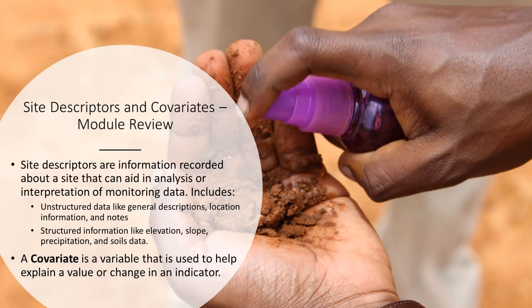So in review, site descriptors are information that we record about a sampling location that can aid in analysis or interpretation of monitoring data. These can include unstructured data like general site descriptions, location information, and other notes that you record. They can also include structured data that you collect at a site that are not directly indicators themselves, like elevation, slope, precipitation, and soils. Finally, a covariate is a variable that is used to help explain an indicator value or change in an indicator that you observe at a site.